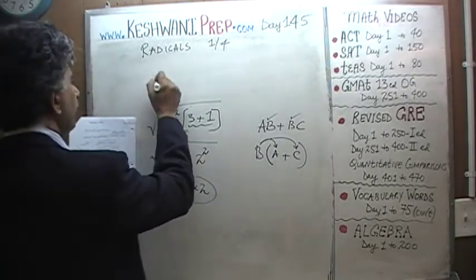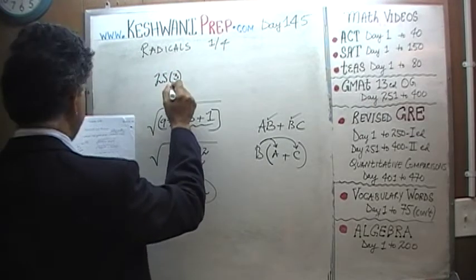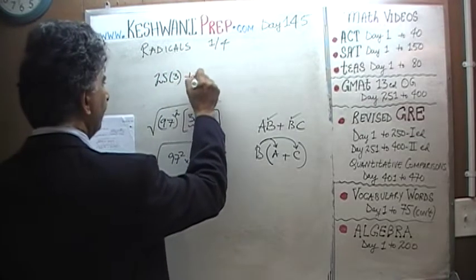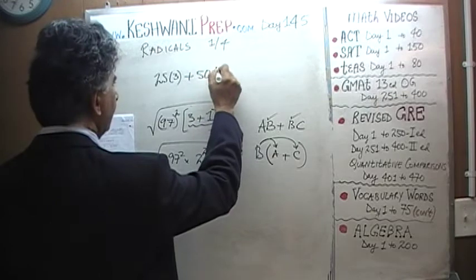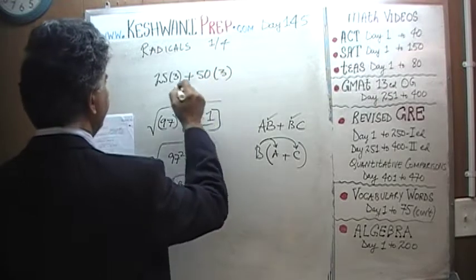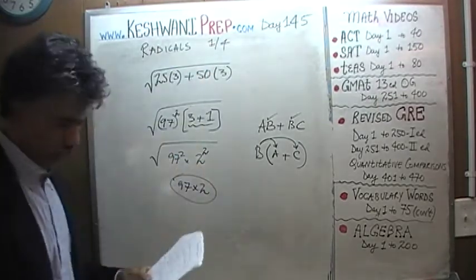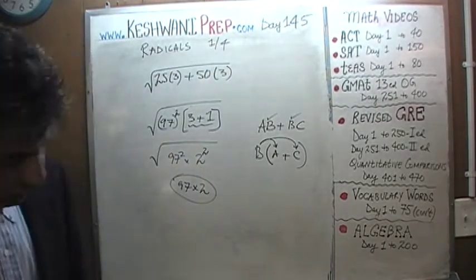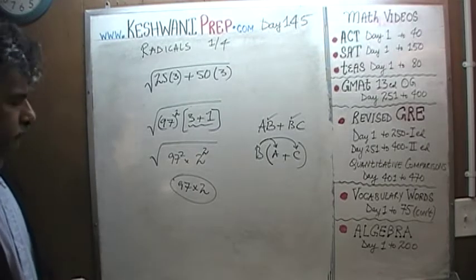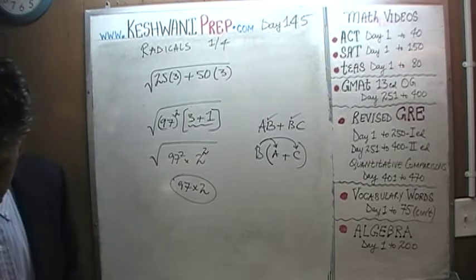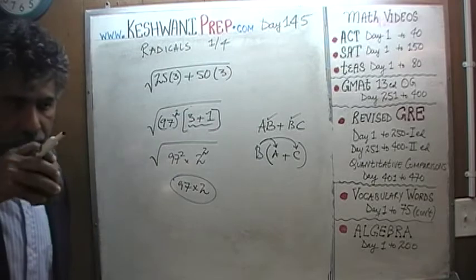Let's do one more: the square root of 25 times 3 plus 50 times 3. Go ahead and do it yourself — I'll give you 5 seconds to pause the video.